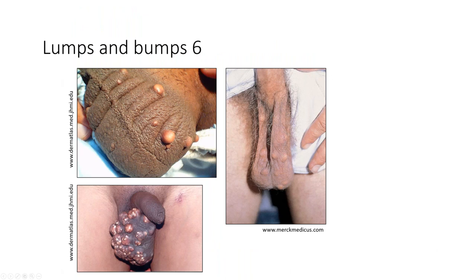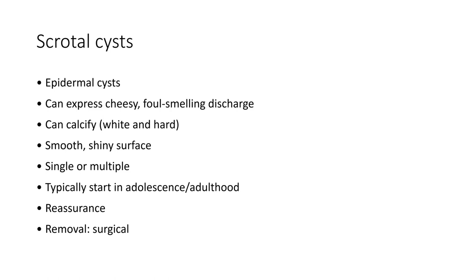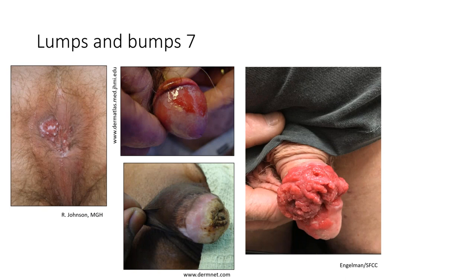Lumps and bumps number six: yellowish-white bumps on the scrotum — these are scrotal cysts, a type of epidermal cyst that can express a cheesy foul-smelling discharge. Over time they can calcify, becoming white and hard. They have a smooth, shiny surface and can be single or multiple, typically starting in adolescence or adulthood. Reassurance is important; the only effective treatment is surgical, which may be considered elective by insurance companies.